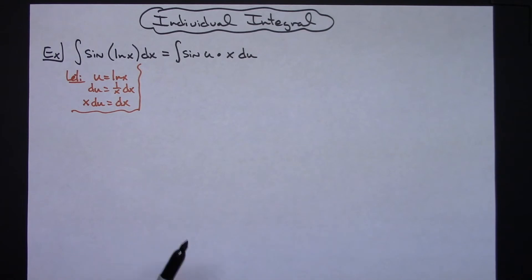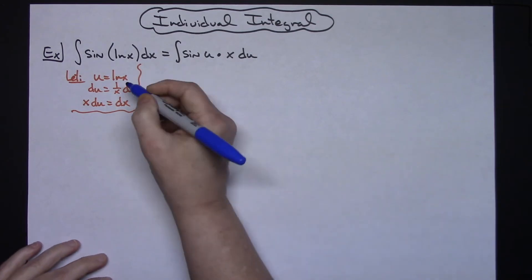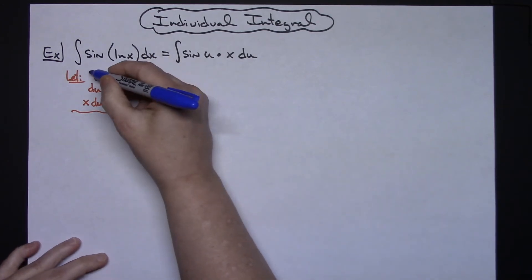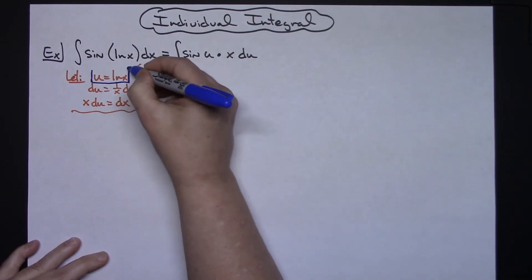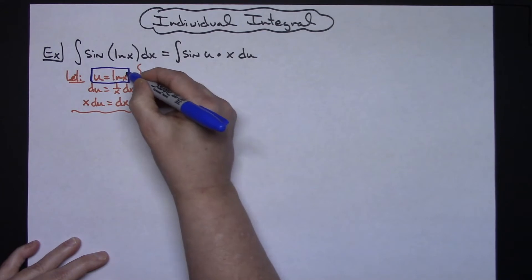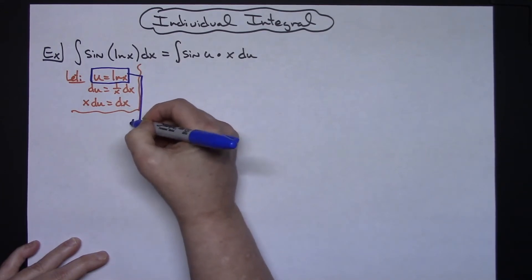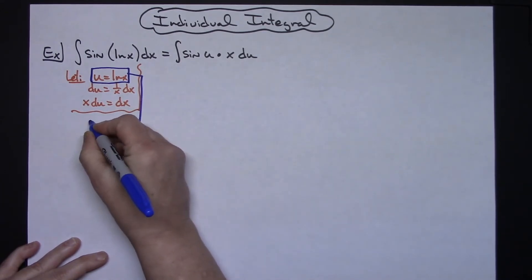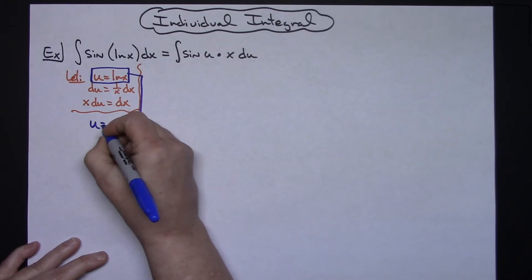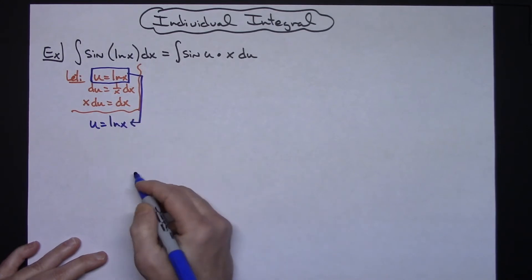Now we're going to use a little trick here that is really common whenever you let u equal the natural log of x. I'm going to take a look at what I've already let u be and just manipulate it and rewrite it. So we have u equal natural log of x.